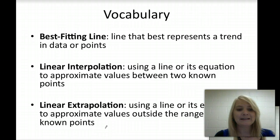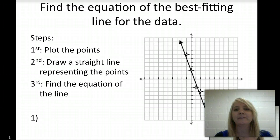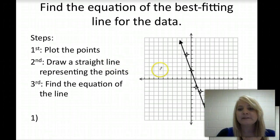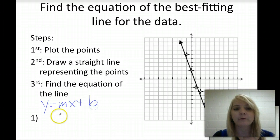The first problem we're going to take a look at today is where we're going to find the equation of a best-fitting line for the data. So our steps are listed out below. First, you plot the points. Second, you draw a straight line representing the points. And third, you're going to find the equation of the line. For this particular example, the points are already plotted, and the line best representing the points is already drawn. So we're going to write this in y equals mx plus b form, so in slope-intercept form.